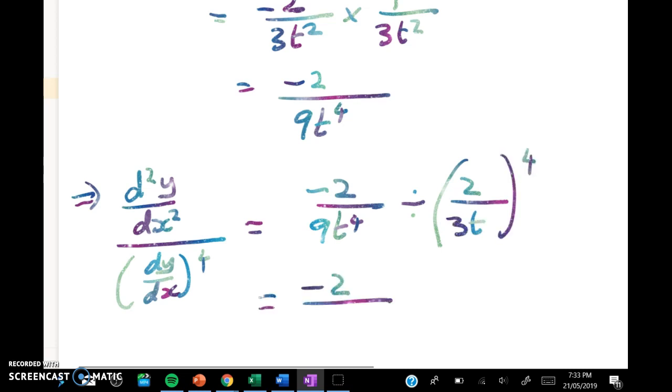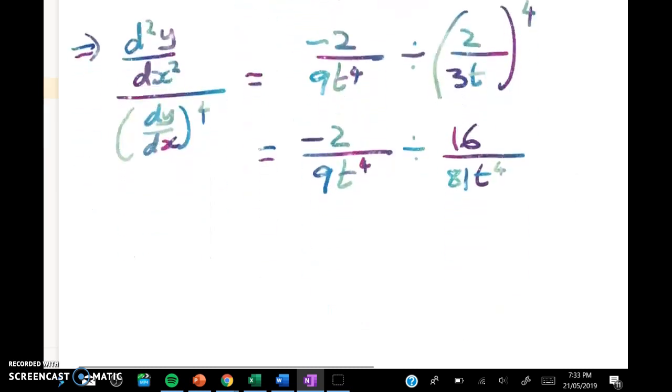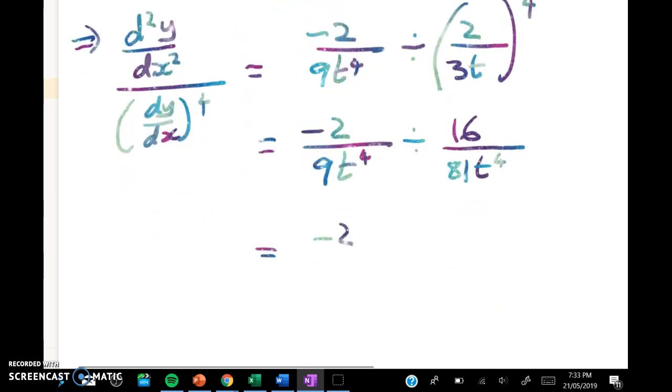So I'm going to clean up a little bit of algebra first. It's divided by 16 over 81t to the power of 4. When I divide by a fraction it's the same as multiplying by the reciprocal.